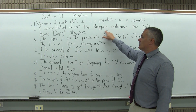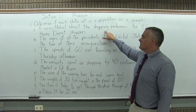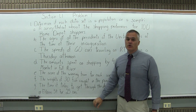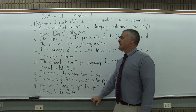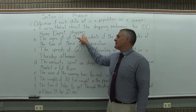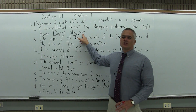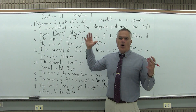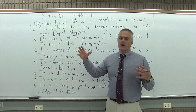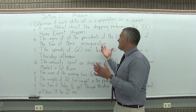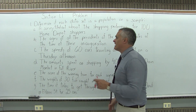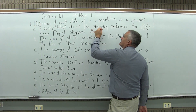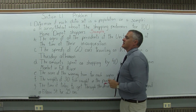The first data set is a survey filled out about the shopping preferences for 100 Home Depot shoppers. This should be a sample. It's not likely that anyone's interested in just those 100 shoppers at Home Depot — probably they're doing a study for all the shoppers at Home Depot, which is impractical to study them all. So examining 100 gives an idea of what's going on. This is a sample because it's only part of the group you're interested in studying.